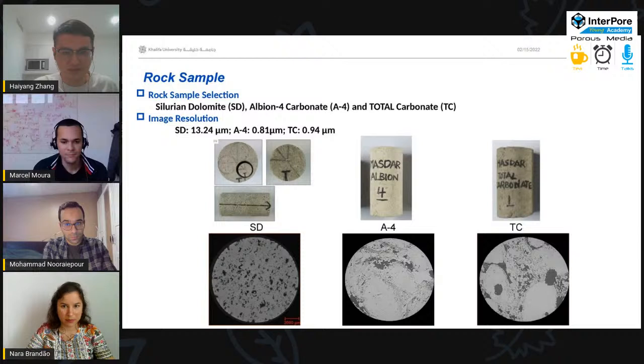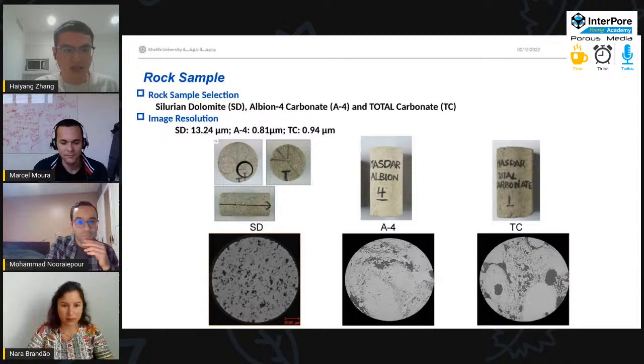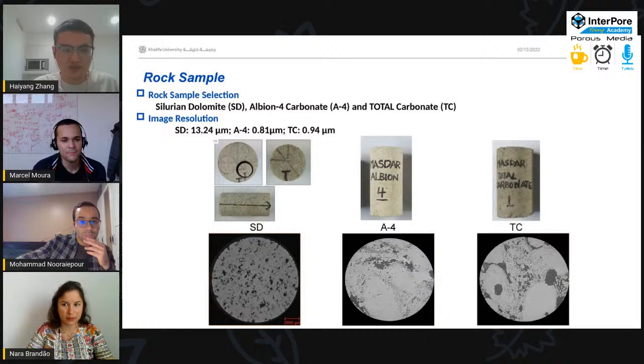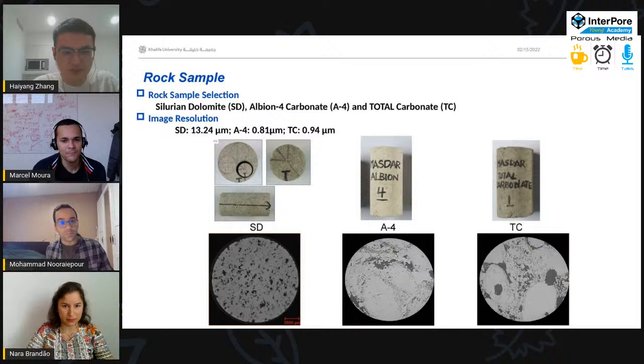Here's the example. We select Silurian dolomite, Estaillades carbonate, and Ketton carbonate, as this figure shows. The resolution is selected 13.24 micrometers for SD, 0.821 for Estaillades, and 0.94 for Ketton. And the below figures are the micro-CT images for the three samples.